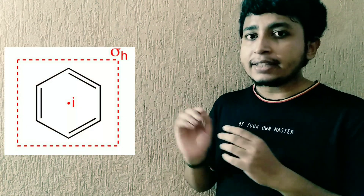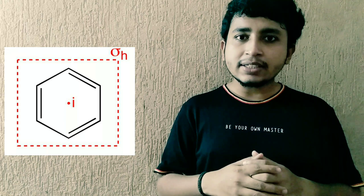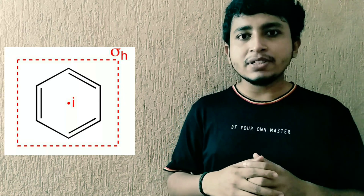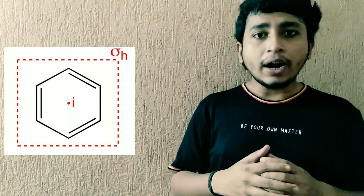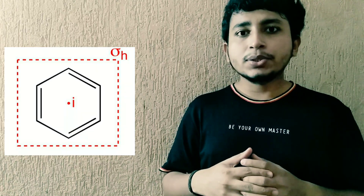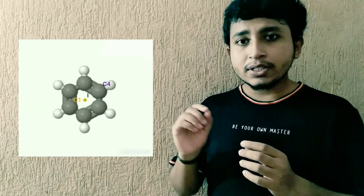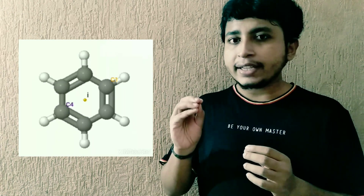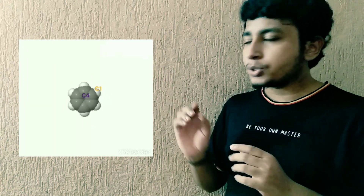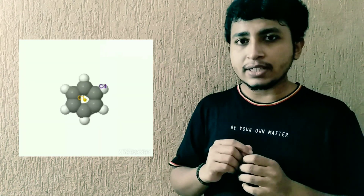The first symmetry element is the inversion center, also known as sigma_h — the horizontal plane of symmetry. In the 3D model, you can see all atoms of benzene coming towards a point present in the middle of the ring, coinciding, and then expanding again to give the same ring. Therefore this point is known as the inversion center.